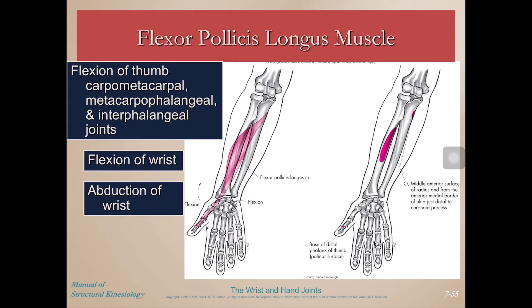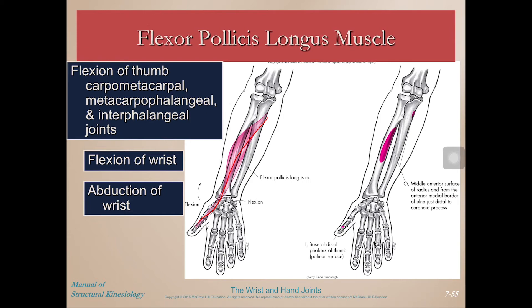Flexor pollicis longus provides flexion of the thumb and flexion of the wrist. Hopefully by now you're connecting that anything that does finger flexion also does wrist flexion. This muscle also provides abduction of the wrist, because it can pull it into radial deviation.